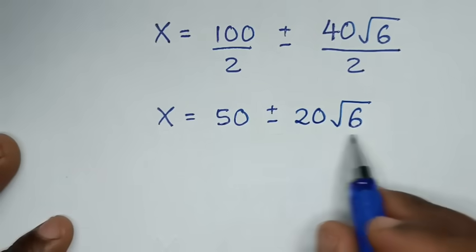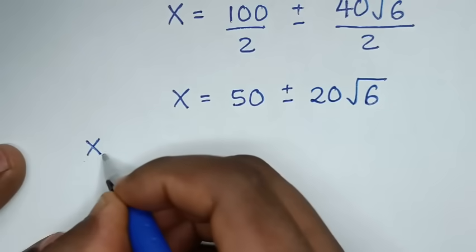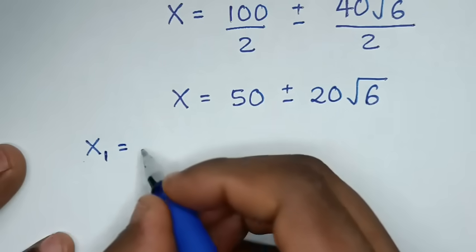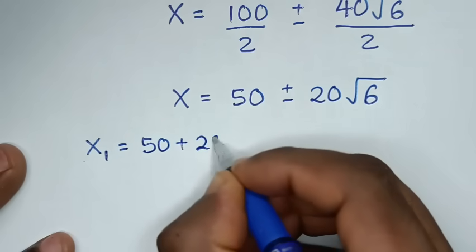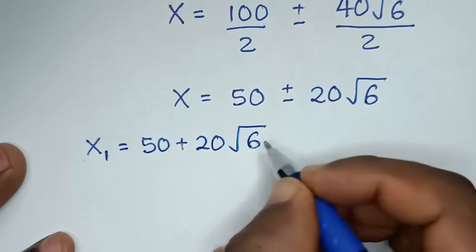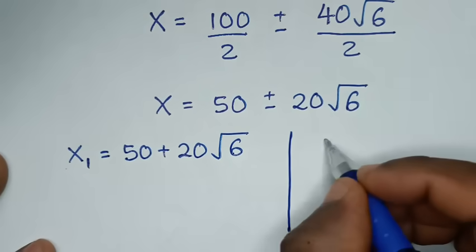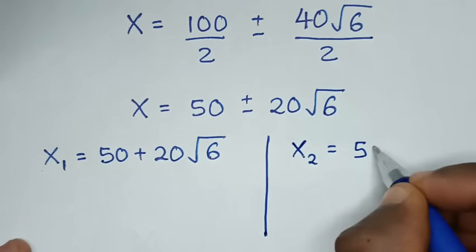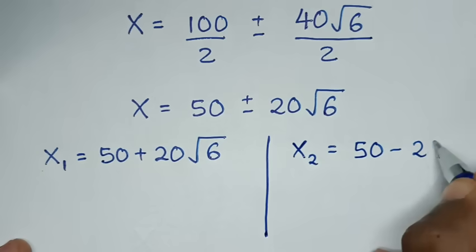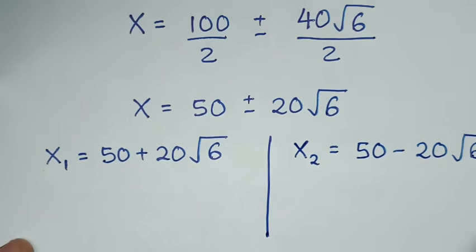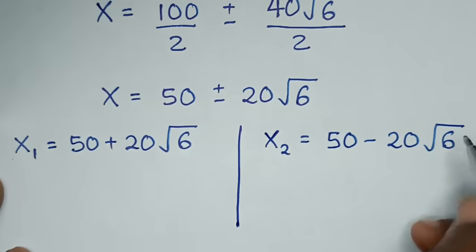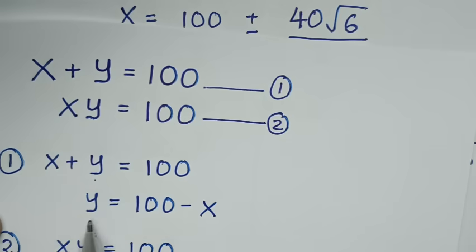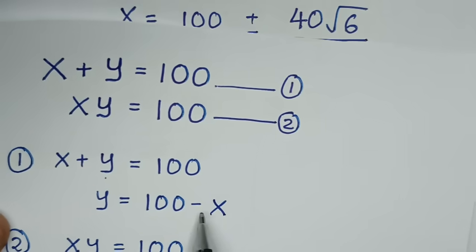We have two values of x. The first value x1 is equal to 50 plus 20 square root of 6. The second value x2 is equal to 50 minus 20 square root of 6. Now let's recall the equation y equals 100 minus x to find the y values.